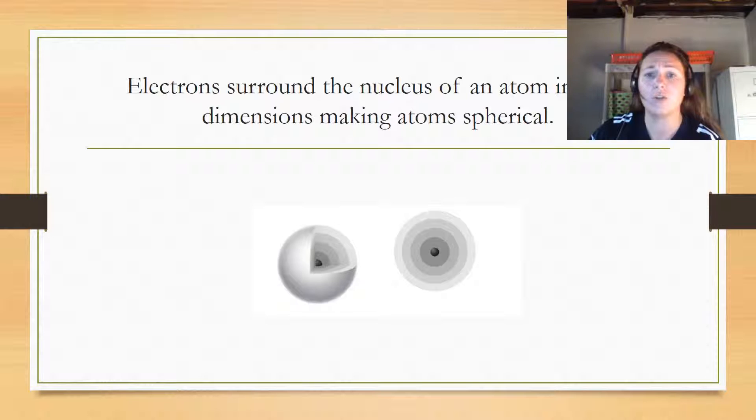Electrons surround the nucleus of an atom in three dimensions, making the atom spherical. Right here is our nucleus, and in this picture it looks like a circle with different layers. There's one layer, two layers, three layers, and our nucleus is in there with another layer that surrounds it.